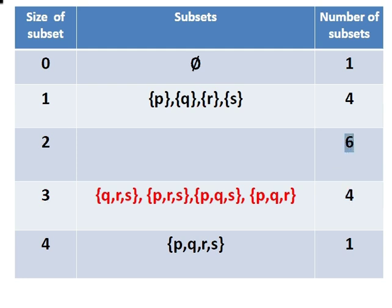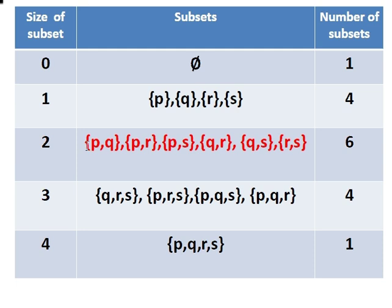And these are the subsets of size 2. So what we have to do is go through them quite thoroughly. P and Q, P and R, P and S, Q and R, Q and S, and R and S. So that's all six of them there.